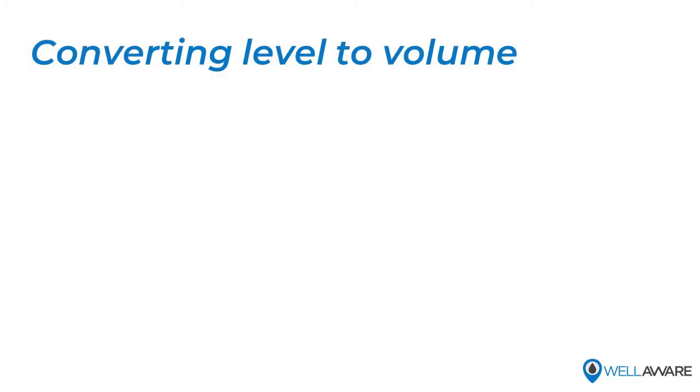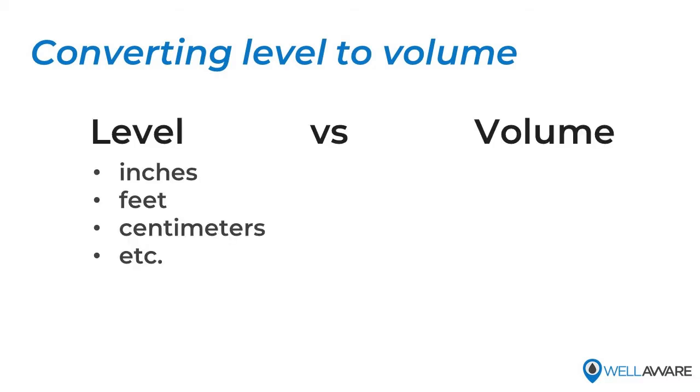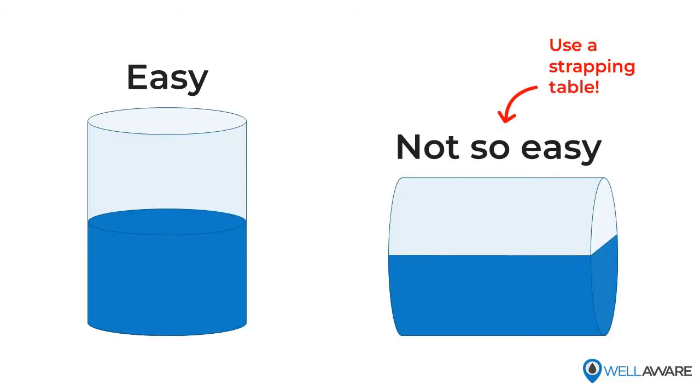First things first, we need to calculate the current volume, and the reason we need to do this is that some tank sensors will only give you a level reading, perhaps in inches, feet, or centimeters, and not a volume reading like gallons or barrels. So the first thing we need to do if we only have tank level is convert it to volume. Now this obviously depends on the shape of your tank. For simple shapes like boxes and vertical cylinders, this is pretty easy.